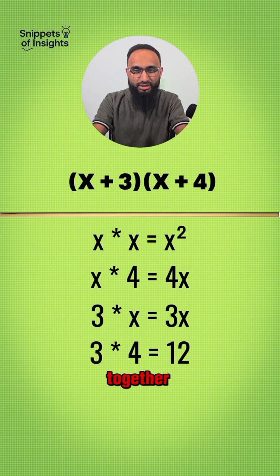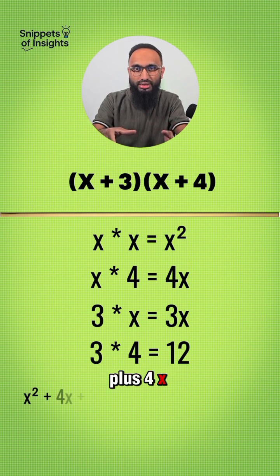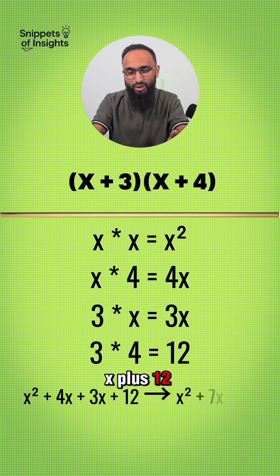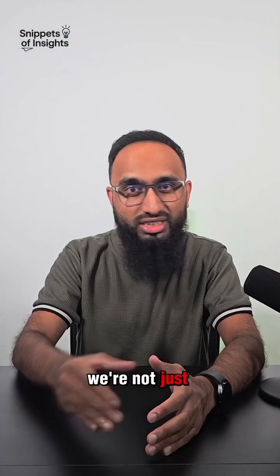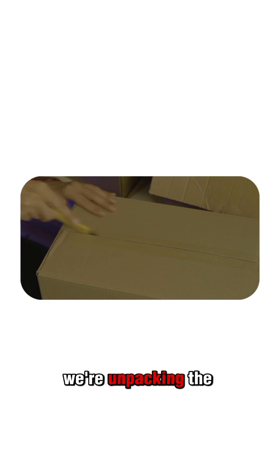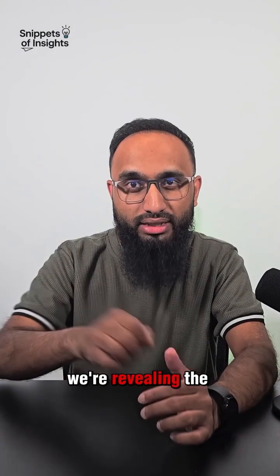So let's add all of that together: x² + 4x + 3x + 12, which is x² + 7x + 12, which matches. So when we're factorizing, we're not just simplifying, we're unpacking the equation, we're revealing the structure.